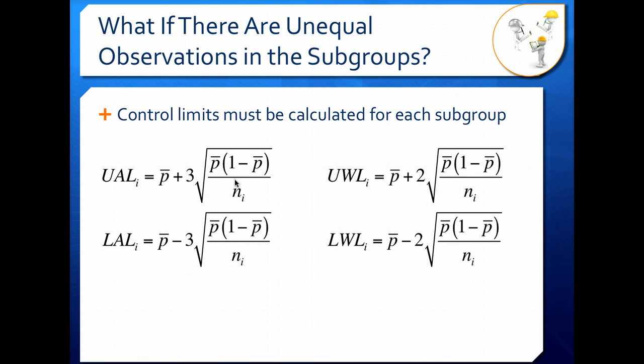So if you get lucky and some subgroups have the same number of samples in them, that's great. Then you can use the same numbers for your action and warning limits. However, every time your n changes for your subgroups, you're going to need to recalculate your limits and you'll have to post those individual limits separately to your control chart.